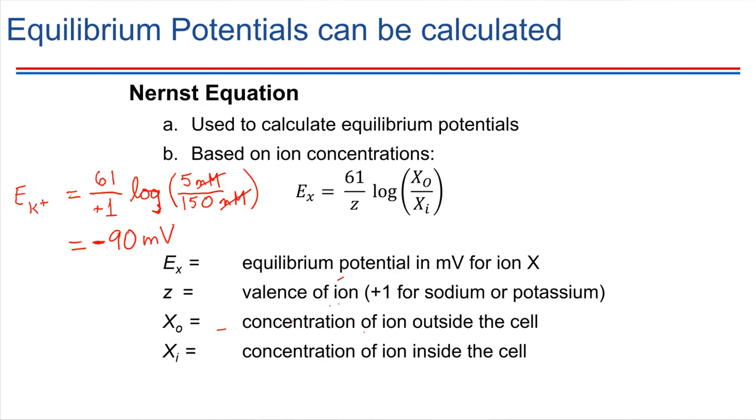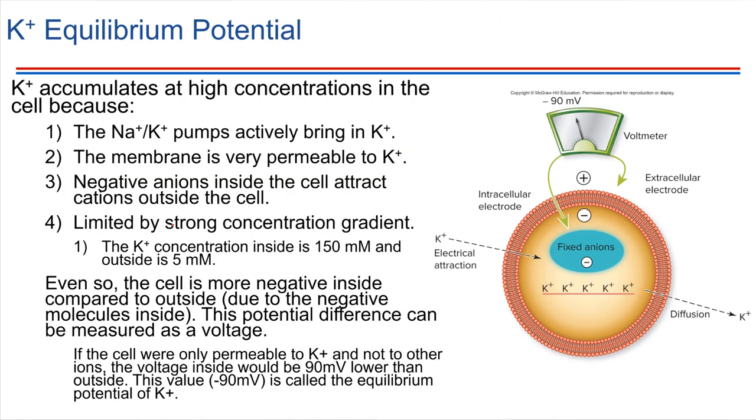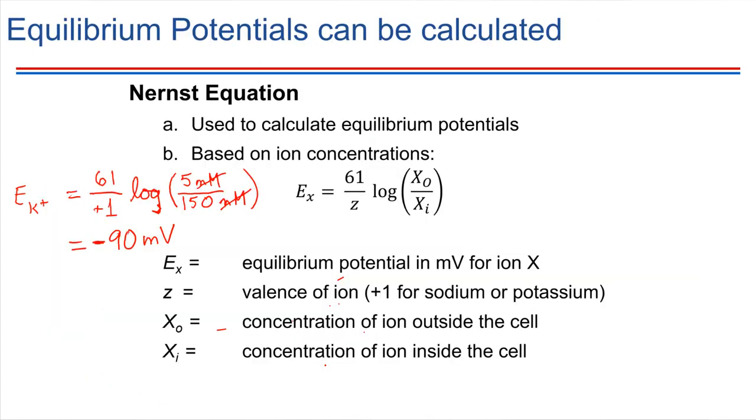That does indeed match up with what we said a moment ago on this slide. The value was minus 90 millivolts for the equilibrium potential of potassium. Now we've just calculated it using the Nernst equation.